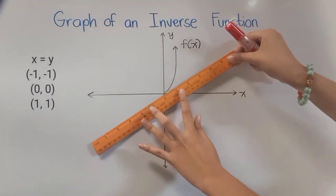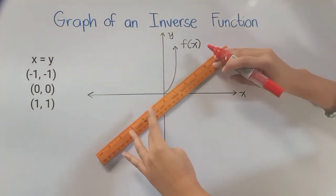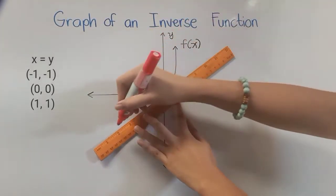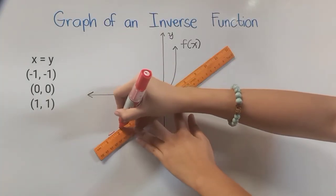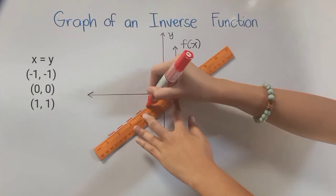From that equation, we can have the following coordinates: negative 1, negative 1; 0, 0; 1, 1; and so on and so forth. This is how our x equals y graph looks like.